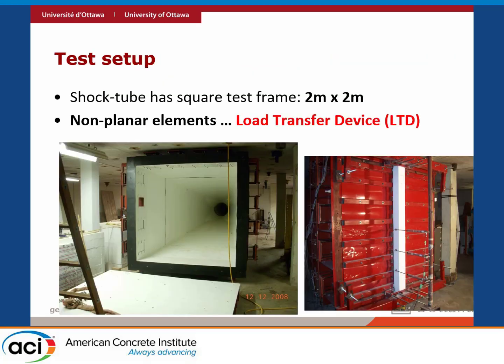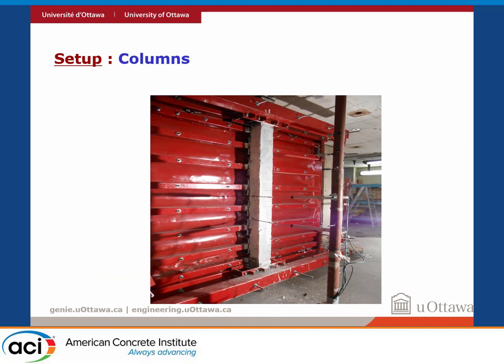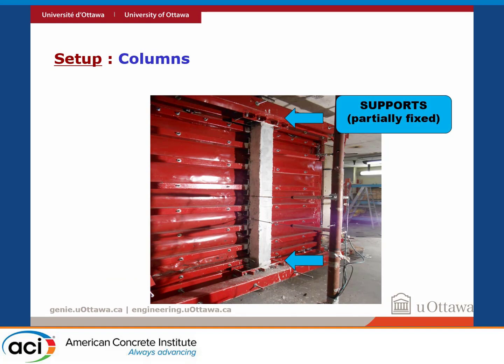Our shock tube has a two-meter-by-two-meter opening — suitable for a slab or wall. For a column, we had to use a load transfer device: sheet metal attached with steel HSS tubes to transfer the blast load. Here's the setup — we tried to get some fixity with partially fixed supports, bolted as much as possible. You don't get fully fixed, but you get partial fixity. The loading essentially transferred the blast load as a distributed load onto the specimen.